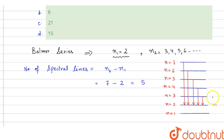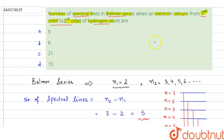These are a total of 5 possible transitions from higher energy levels to the second orbit. Since the higher energy level here is 7, we have a total of 5 transitions. So the answer is 5, and option A is the correct answer.